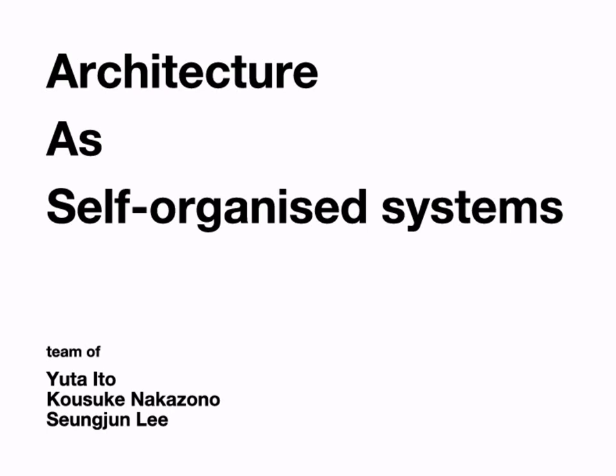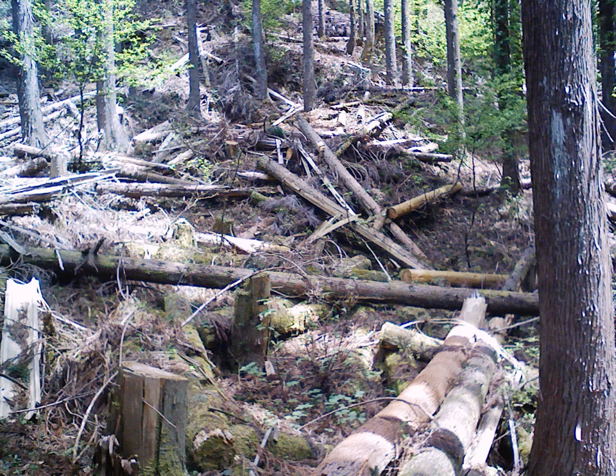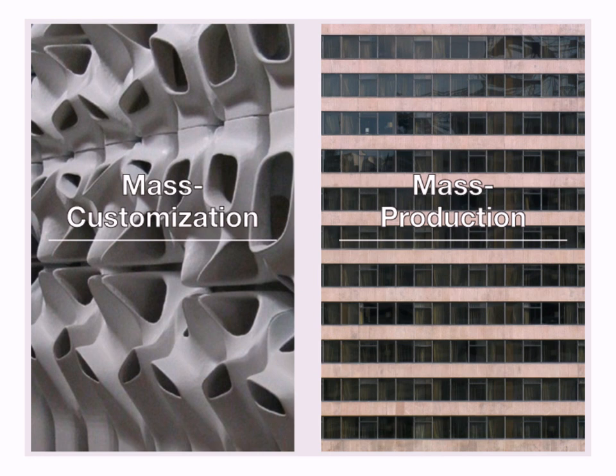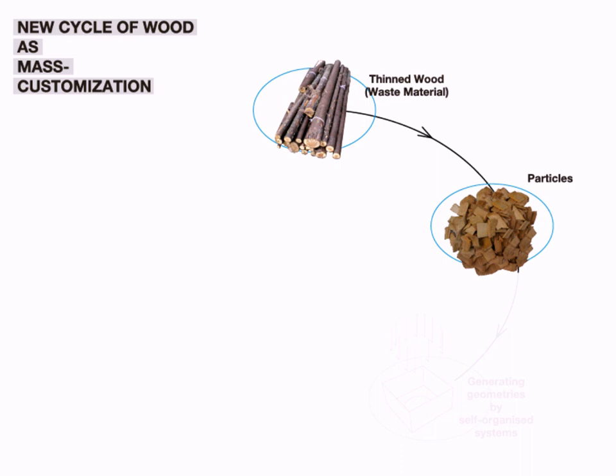Architecture as a self-organized system. We use styrofoam as our material because it's a big waste issue in Japan. We design a mass customization system instead of a mass production one. We try to use the waste more efficiently and produce a variety of forms.